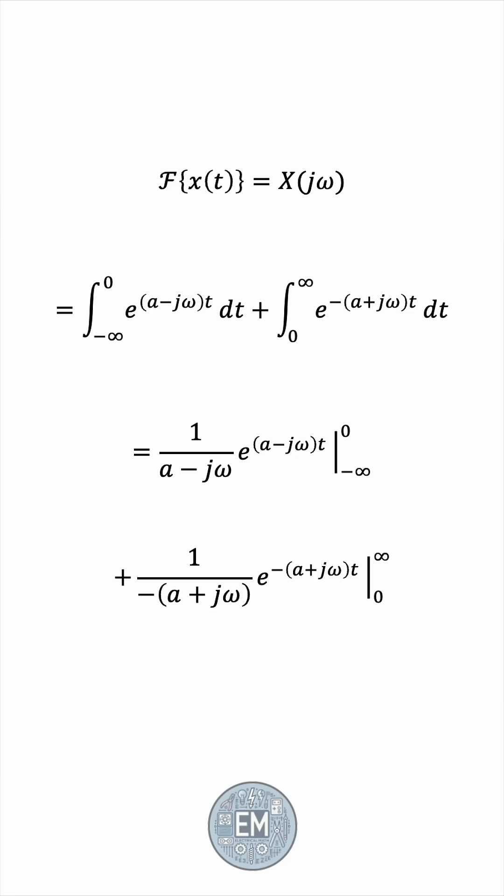It's an engineering course, so formality is not of the essence. We get 1 over a minus j omega in the first case, and the second piece becomes, well, let's take the negative outside, like this, and now at infinity it's 0, at 0 it's 1, so we have 0 minus 1, and the negative sign gets cancelled out.